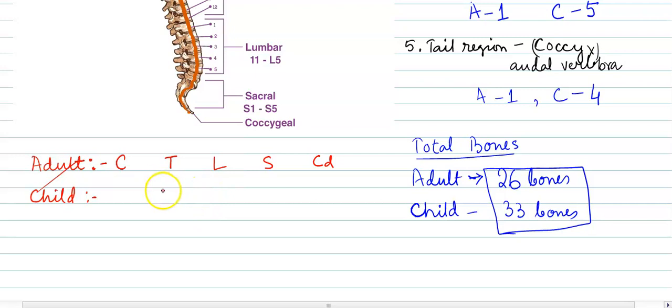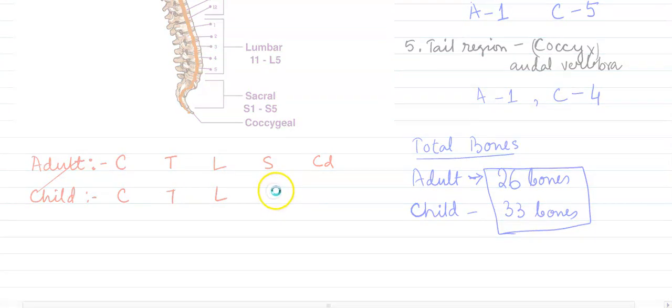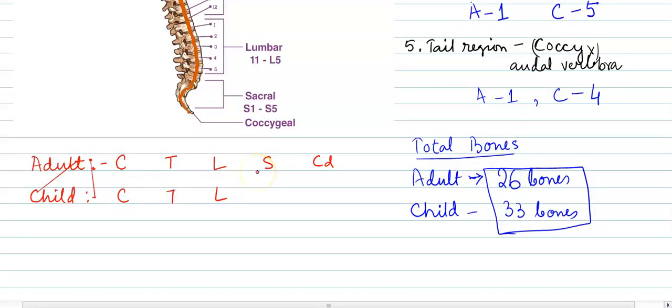Now C, T, L, S, and CD. And child: C, T, L, S, and CD. This type of work is done. And in this case, where you have the differences, those differences you will come to.